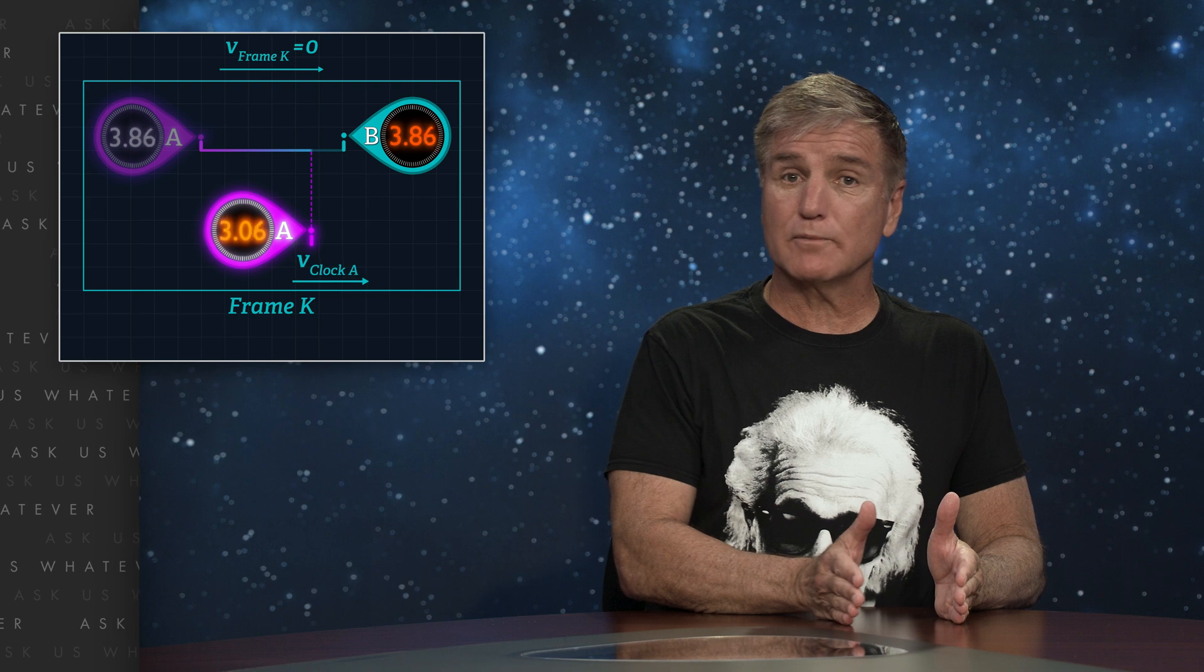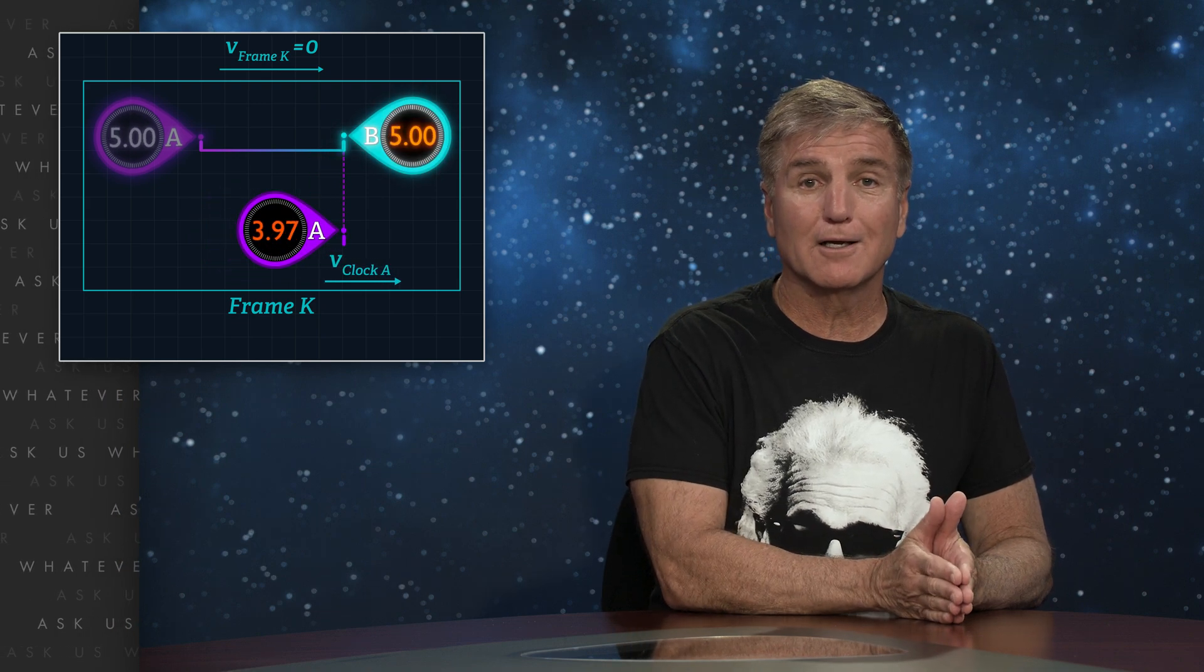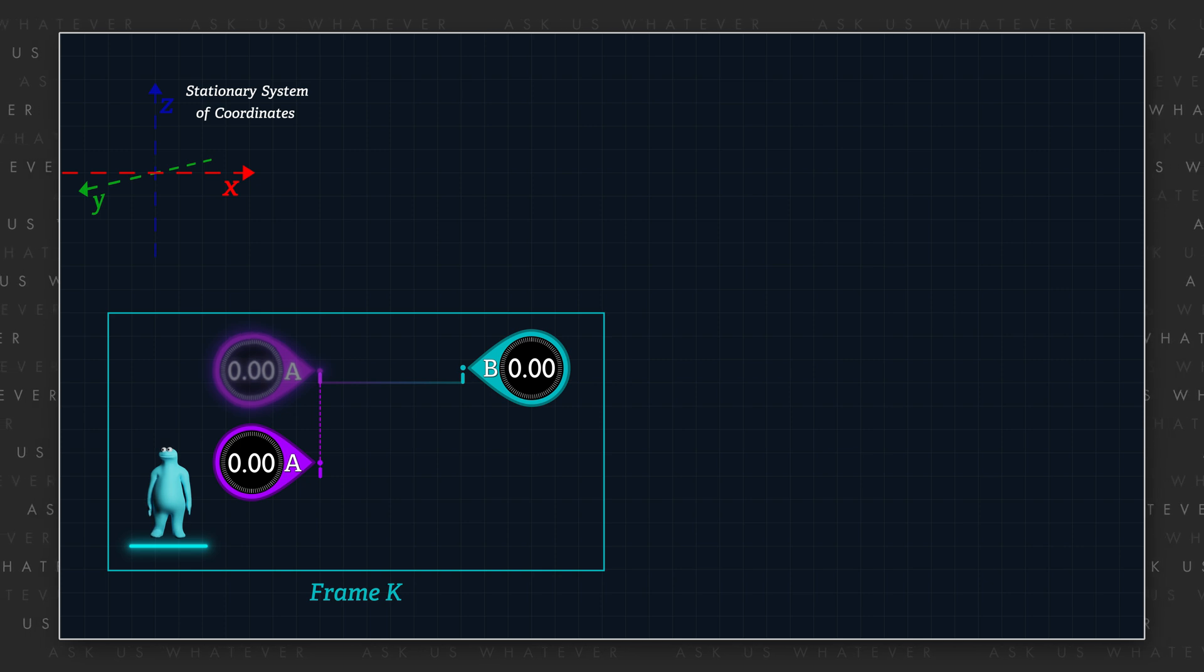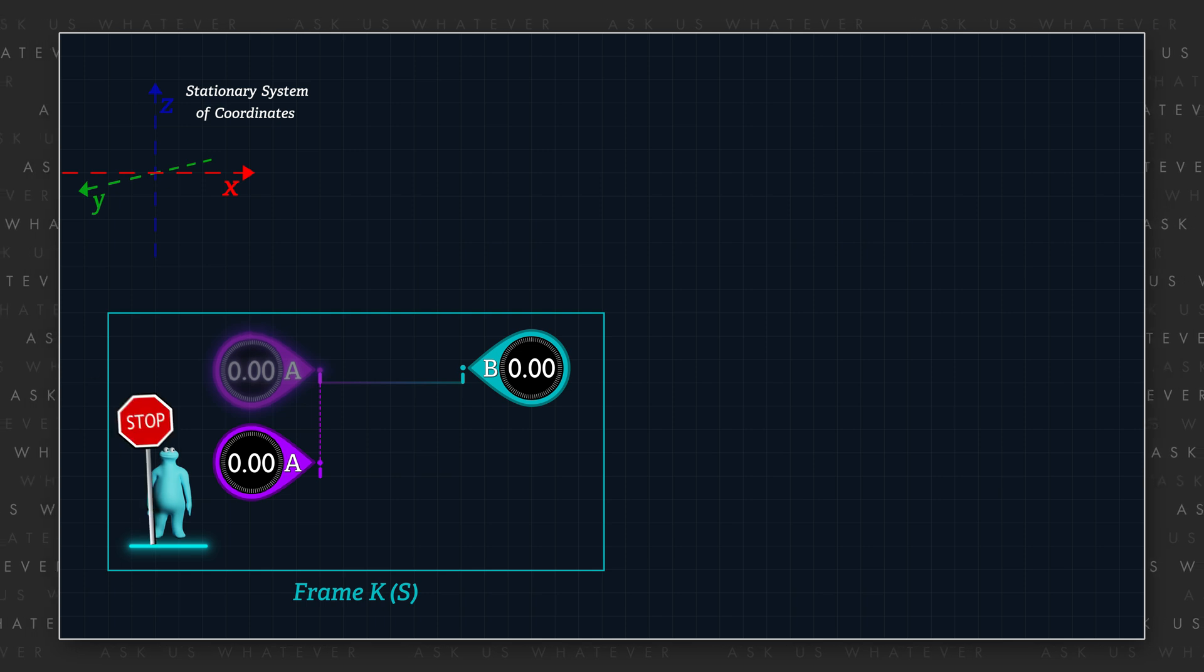So Einstein knew that two distant clocks that he considered synchronous in a stationary inertial reference frame would no longer be synchronous if one of the clocks was moved to join the other clock. However, there's a catch. In his example, the reference frame capital K, which we call frame S in our example, was stationary,